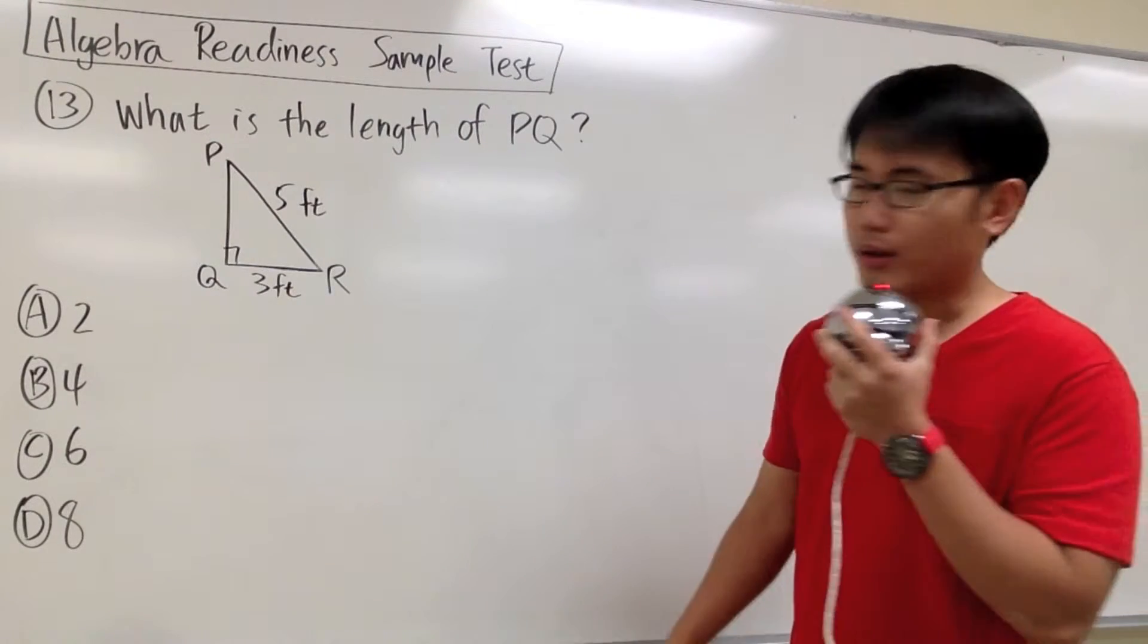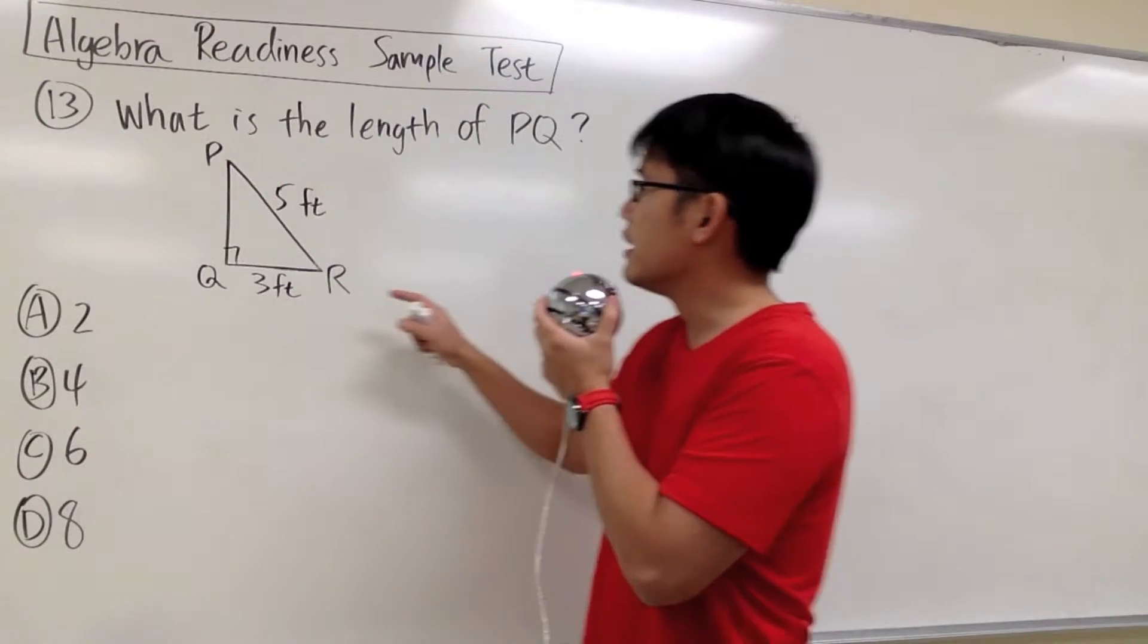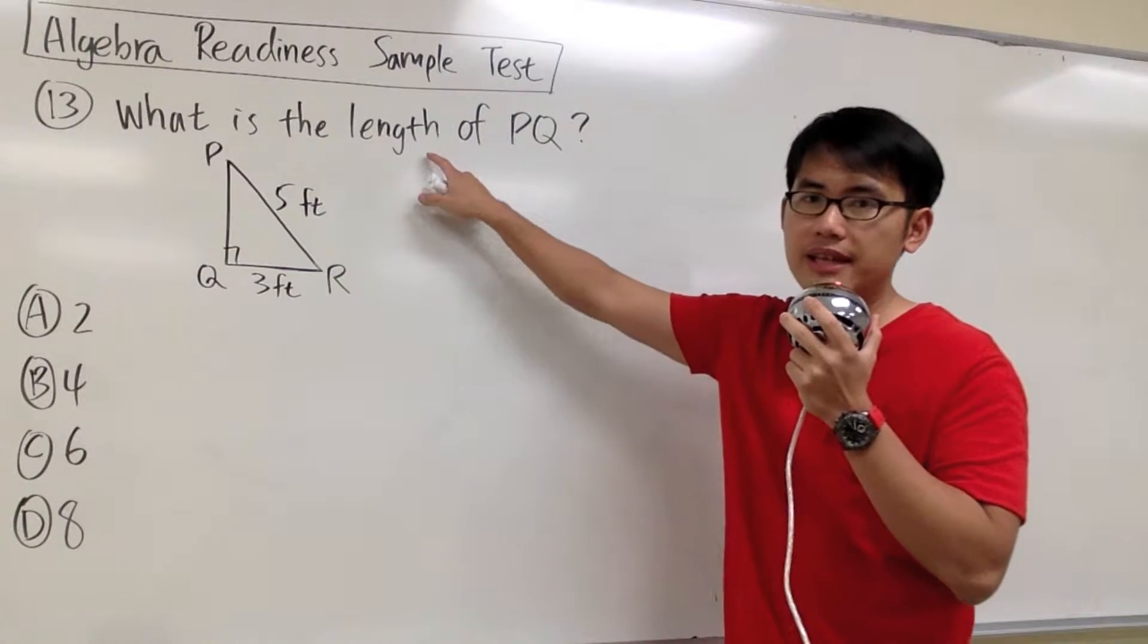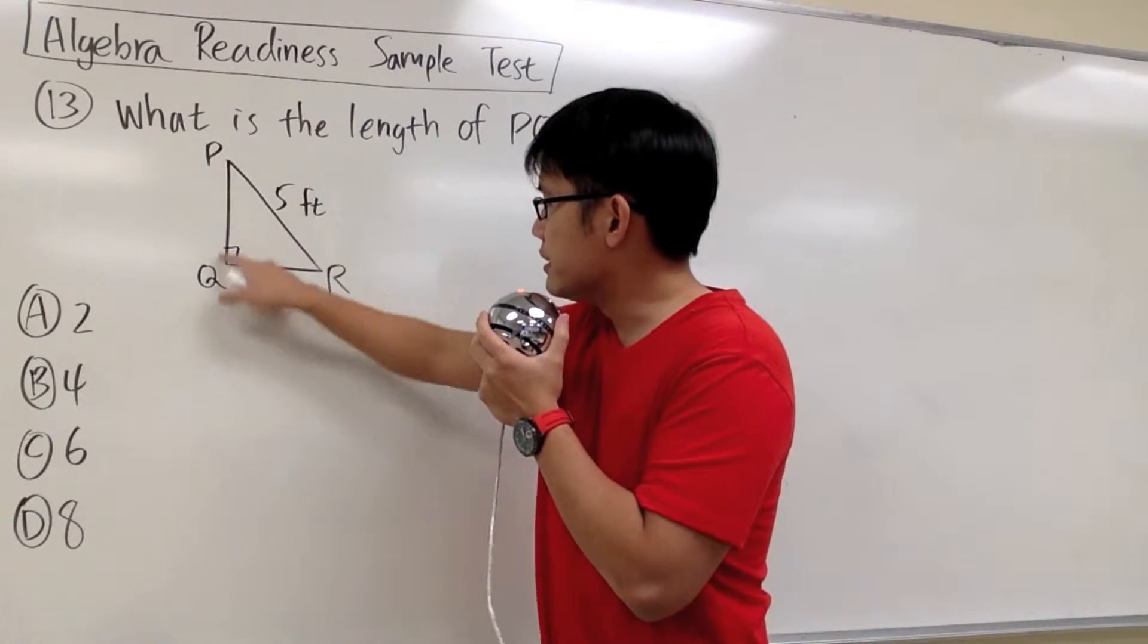For number 13, we are given a right triangle, triangle PQR, and we are trying to find out the length of the side PQ. It's right here, this side.